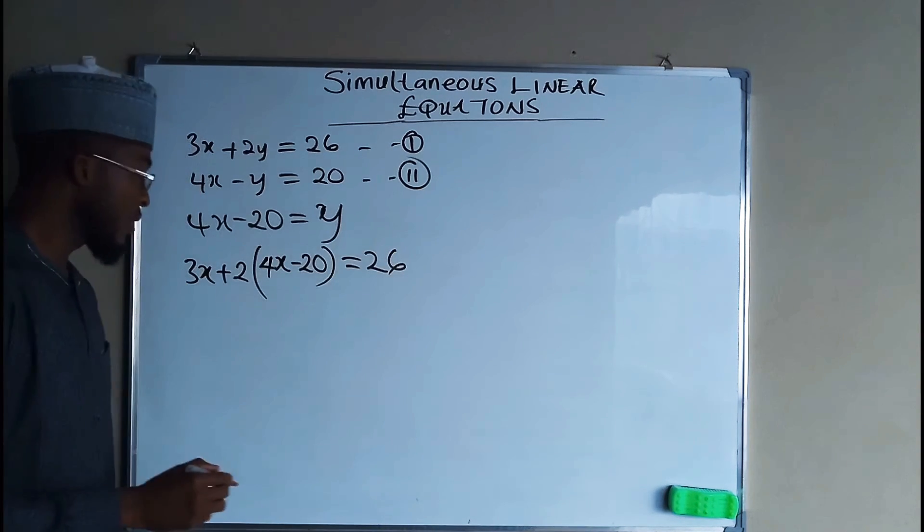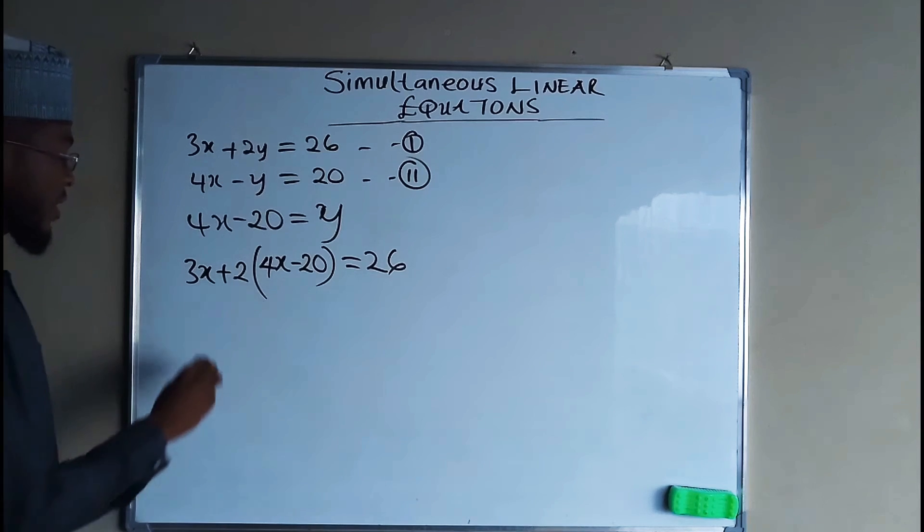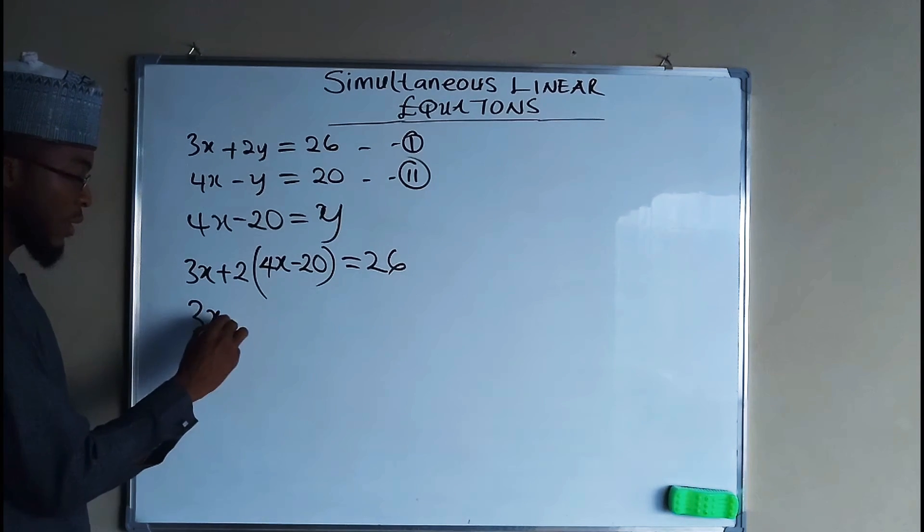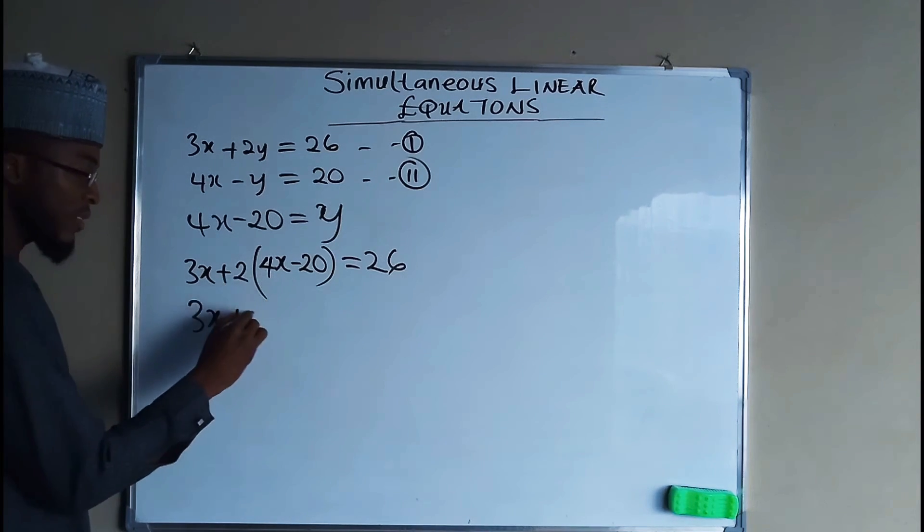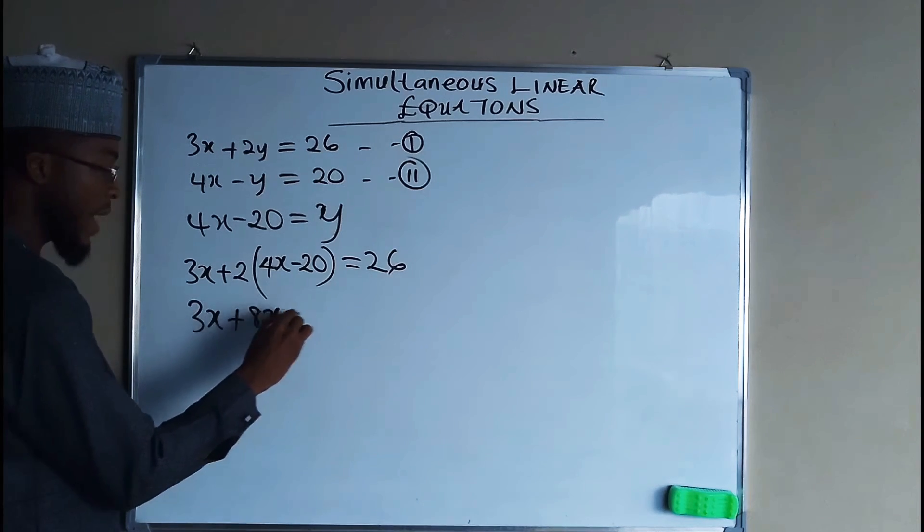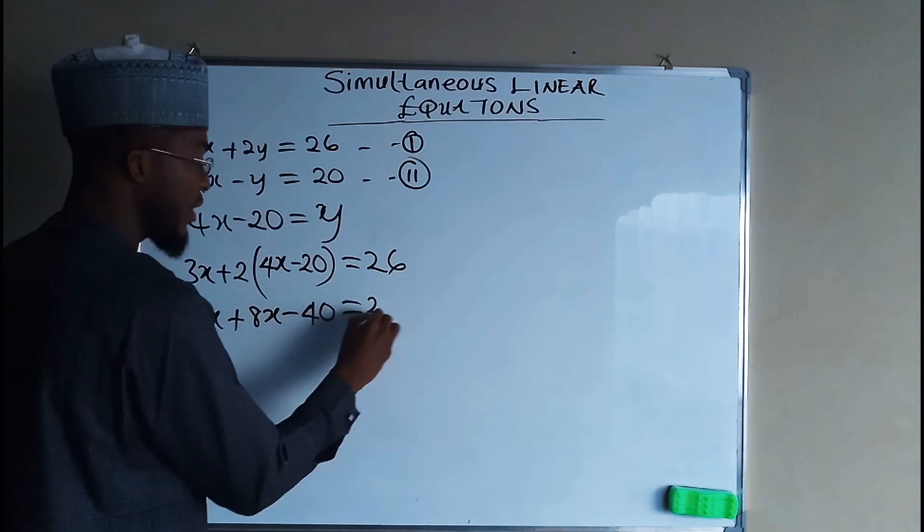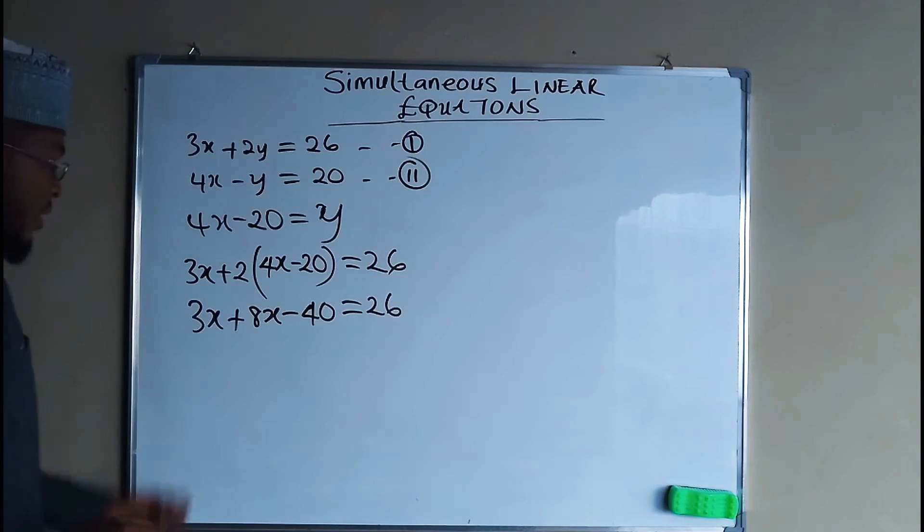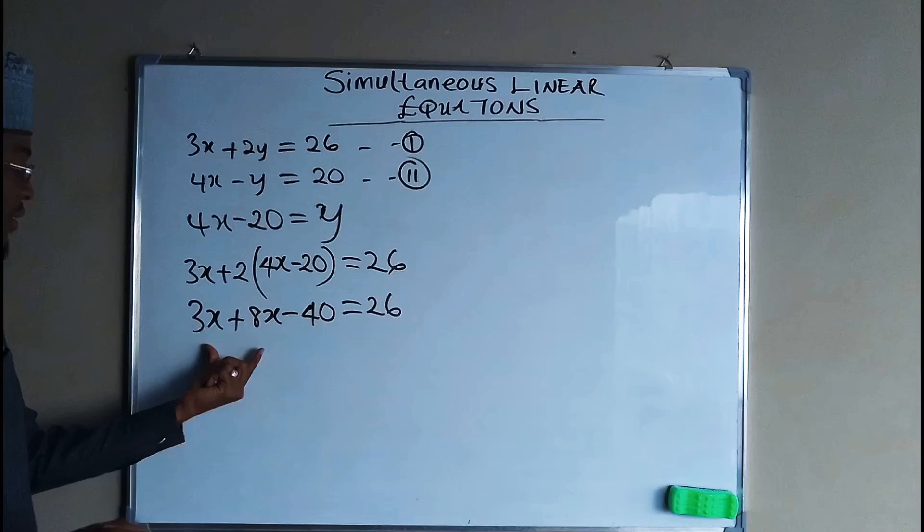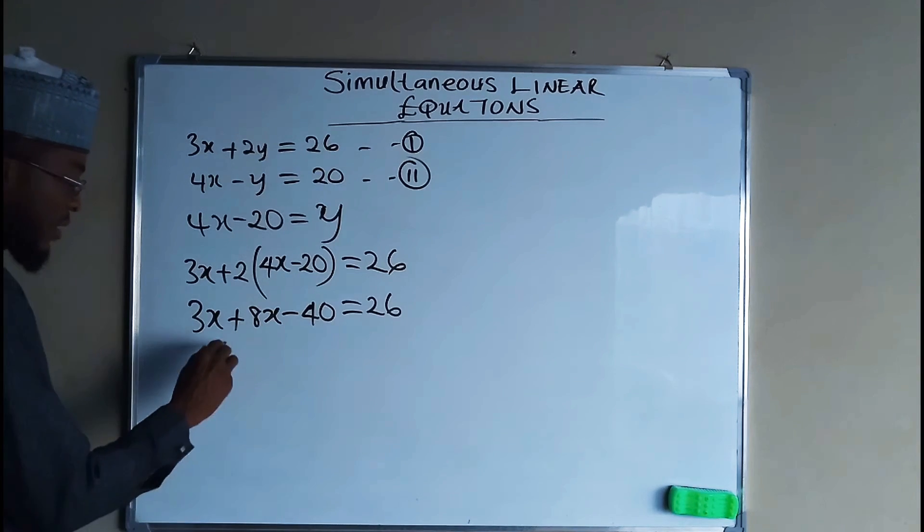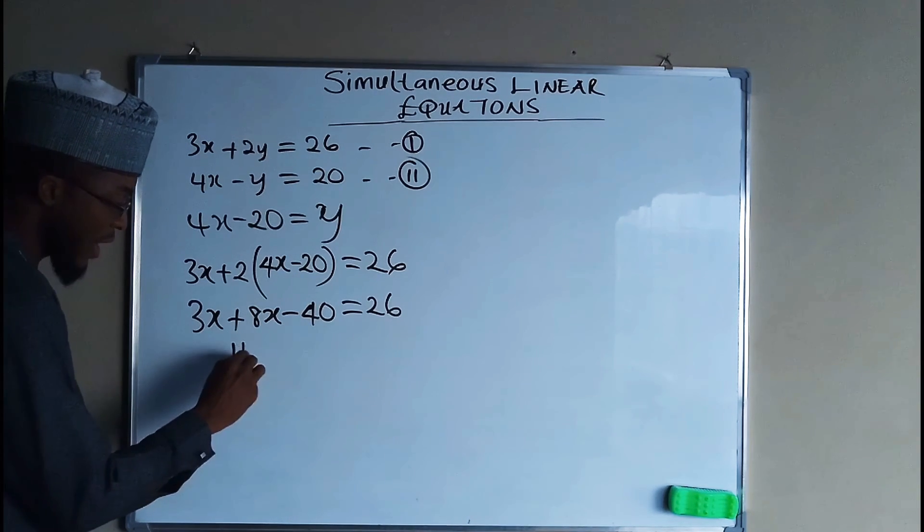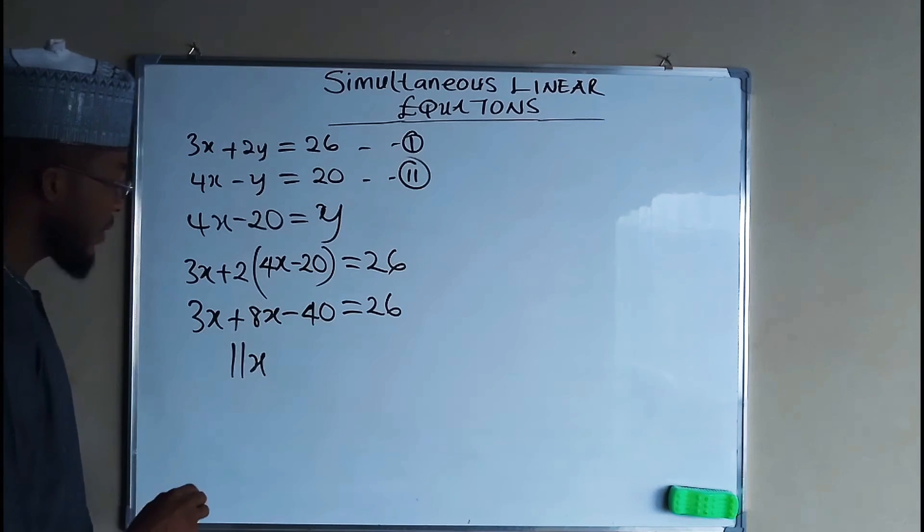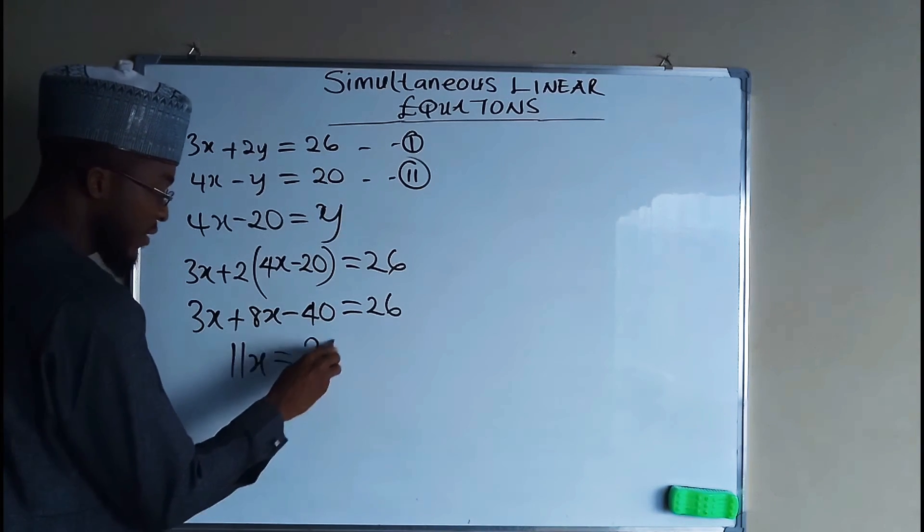Now we need to expand this bracket. We have 3x plus 8x minus 2 times 20 is 40, and this is equal to 26. But 3x plus 8x is definitely equal to 11x equals to 26 plus 40.